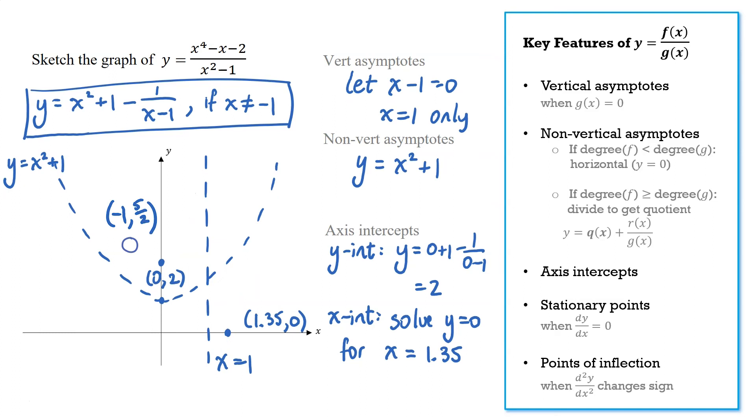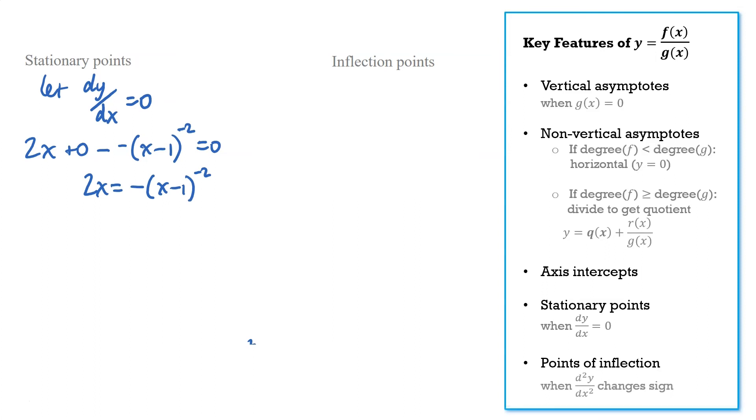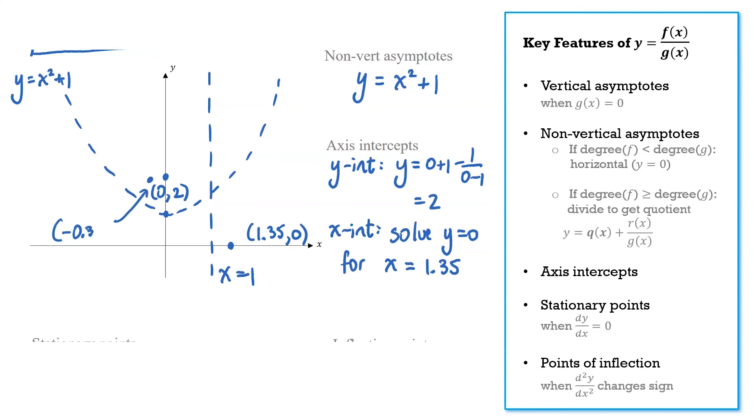To differentiate, rather than using the quotient rule I can take the quotient remainder form we had and differentiate that. I think that's easier. So that's our derivative. Solving that equals 0, that's not going to have a nice easy solution, but we can use our calculator to get x is negative 0.3. We can find the y value using substitution and then label that on the graph. So x is negative 0.3, y is 1.86.